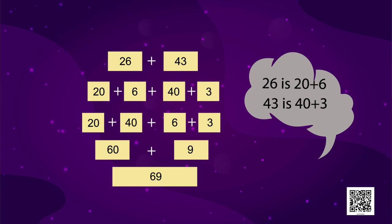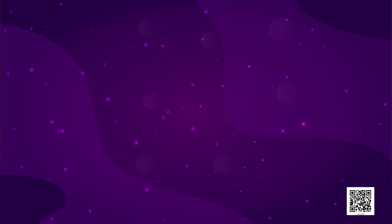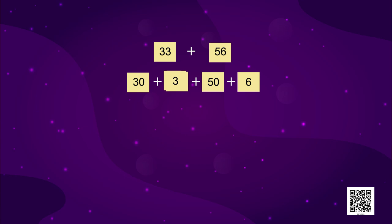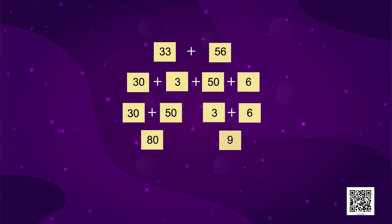Now, let's add another number. It's 33 plus 56. Now, 33 can be written as 30 plus 3. And 56 can be written as 50 plus 6. 30 and 50 together will make 80. And 3 and 6 together will make 9. So, we add 80 and 9. And what do we get? Yes. 89.